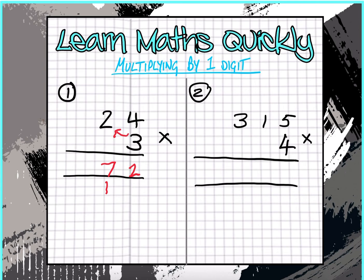The next one's harder because there's a 3-digit number on top, but it's still exactly the same. Now, 5 times 4 equals 20, so we're going to put a 0 here and a 2 here. Now, 4 times 1 is exactly the same, but I'm going to put an arrow just in case we forget. 4 times 1 equals 4, but plus the 2 equals 6, so we're going to put a 6 here.